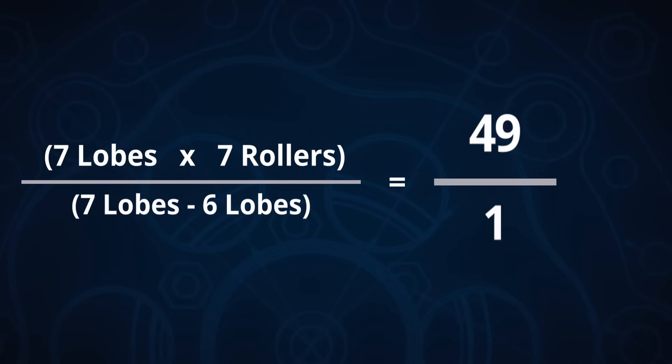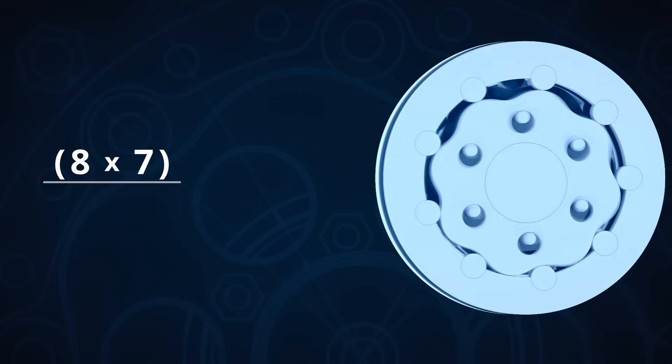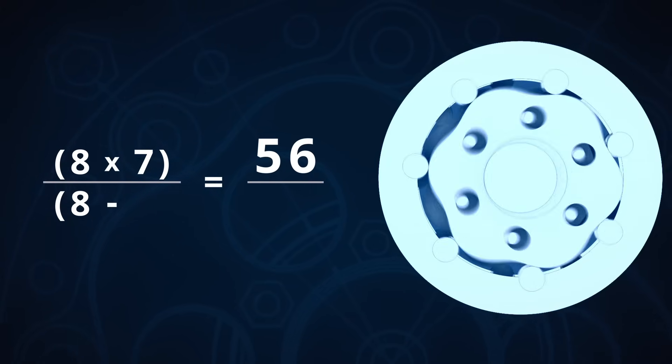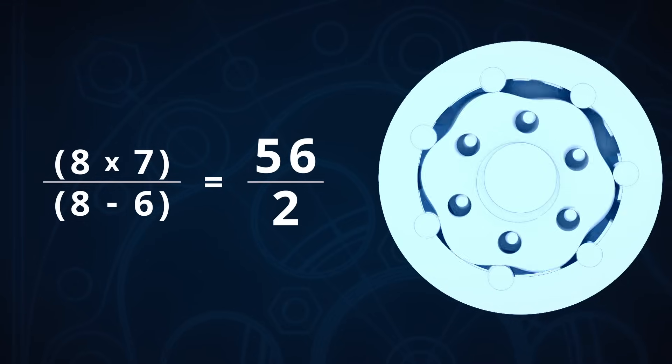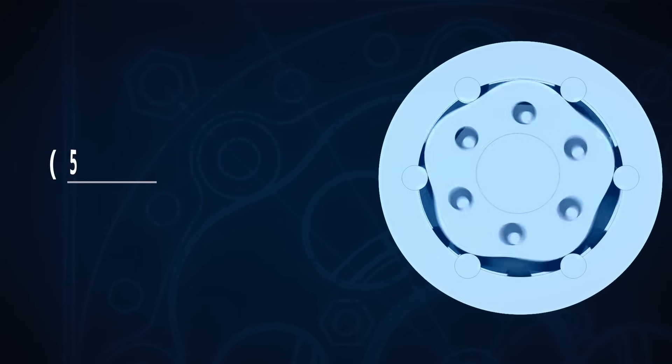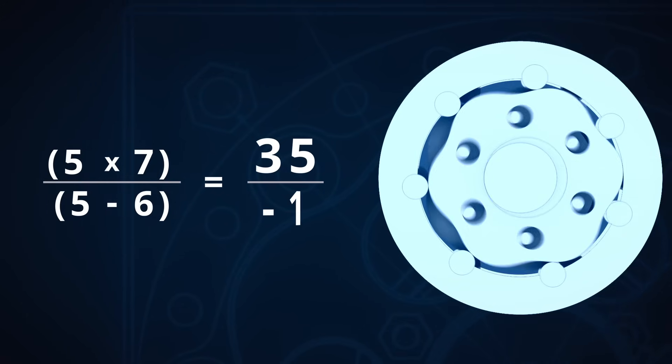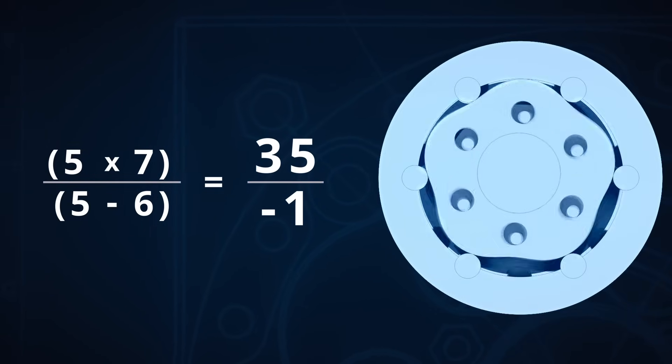But this does start to matter if we plug in some different numbers. So let's try 8 lobes on stage 1, and we'll keep the 7 rollers on stage 2. Then we take the 8 lobes on stage 1 and subtract the 6 lobes from stage 2, giving us a reduction of 56 over 2, or 28 to 1. And you can go the other way too. So let's try 5 lobes on the first stage, and again keep stage 2 the same. But now we take the 5 lobes of stage 1 and subtract the 6 lobes from stage 2, and we get negative 1. So the reducer becomes 35 to 1, but the output now spins in the opposite direction from the input, hence the negative. You can play with these numbers in all sorts of ways and have fun with the math to come up with interesting combos.